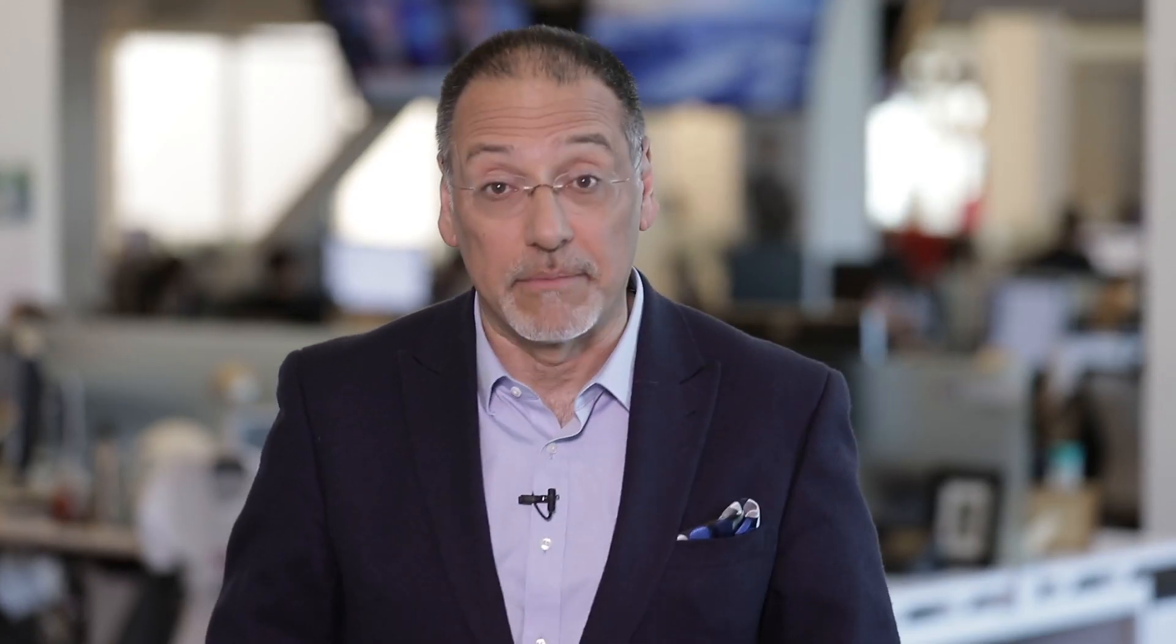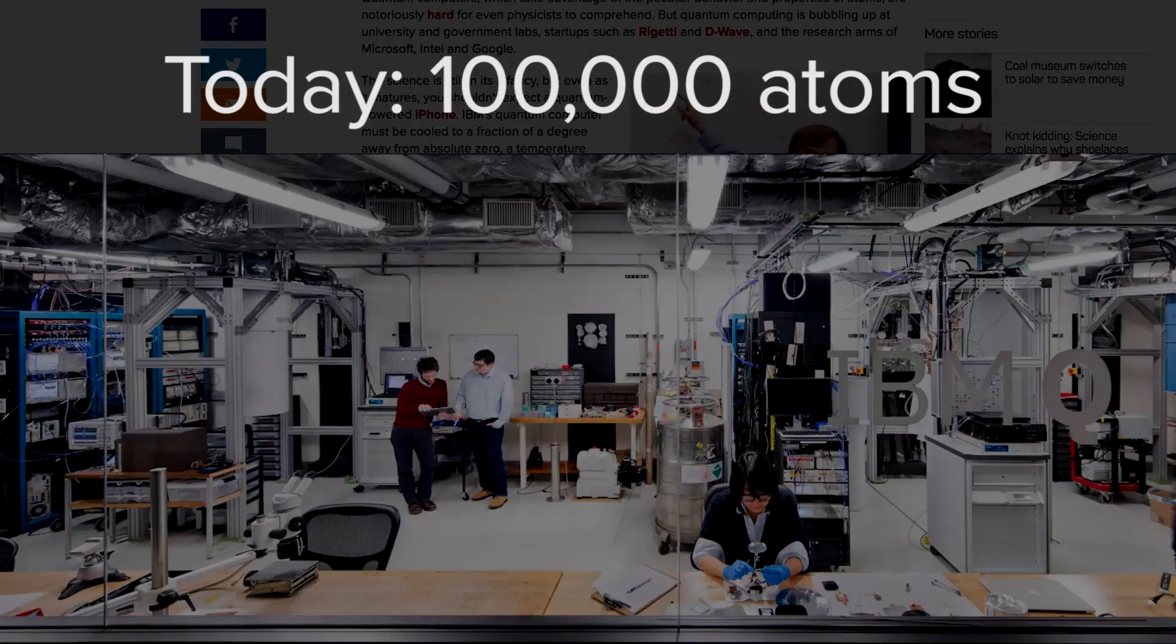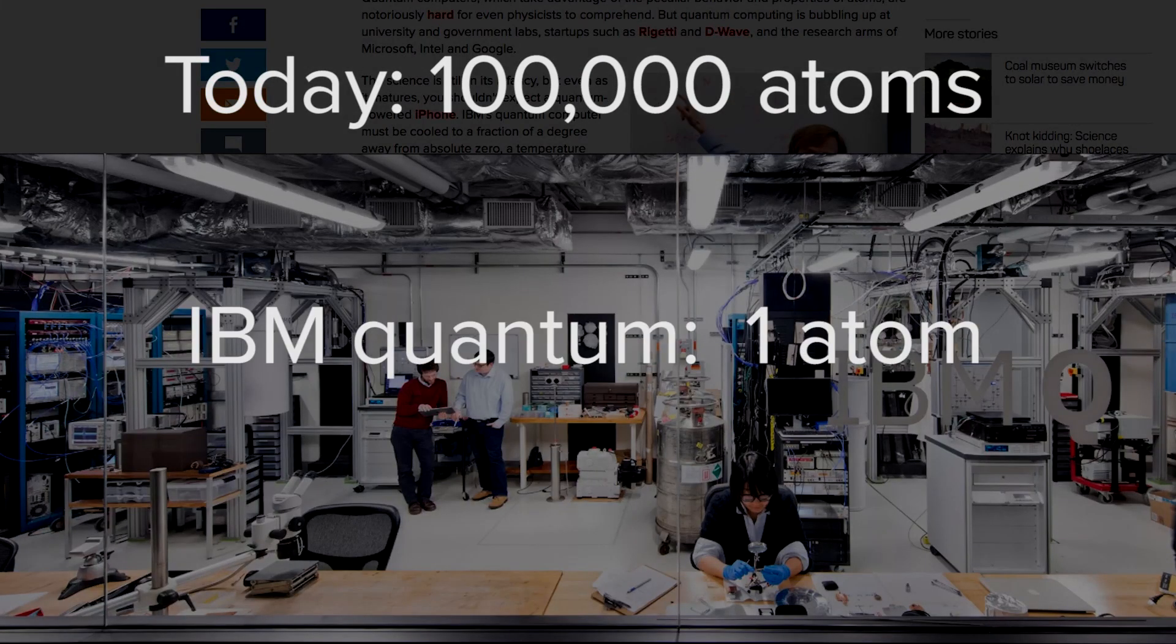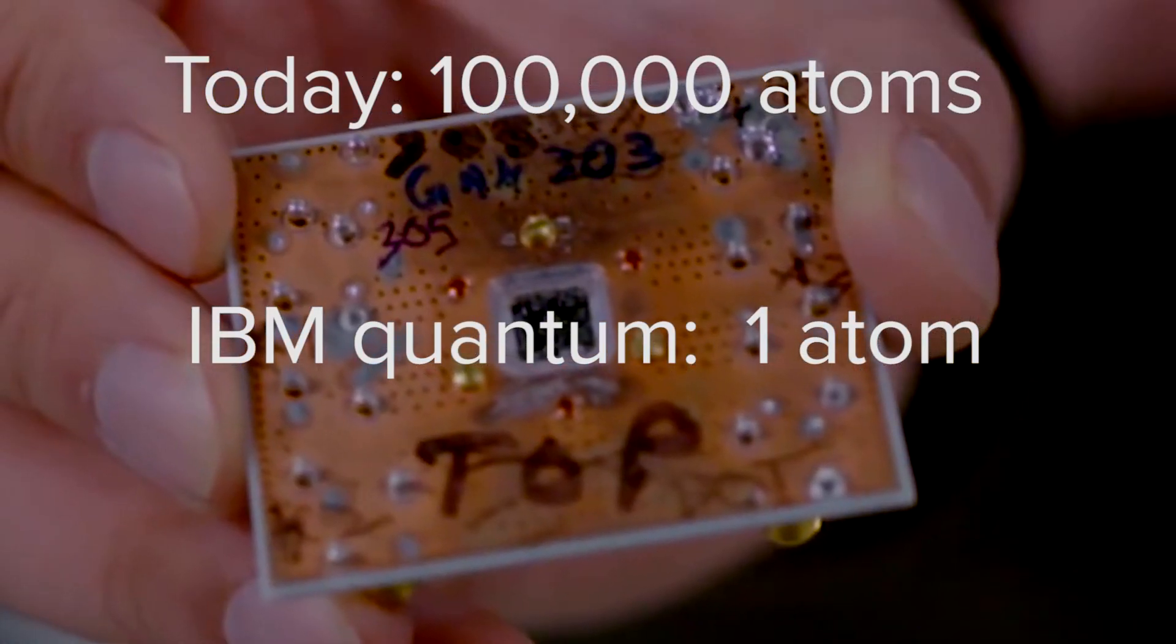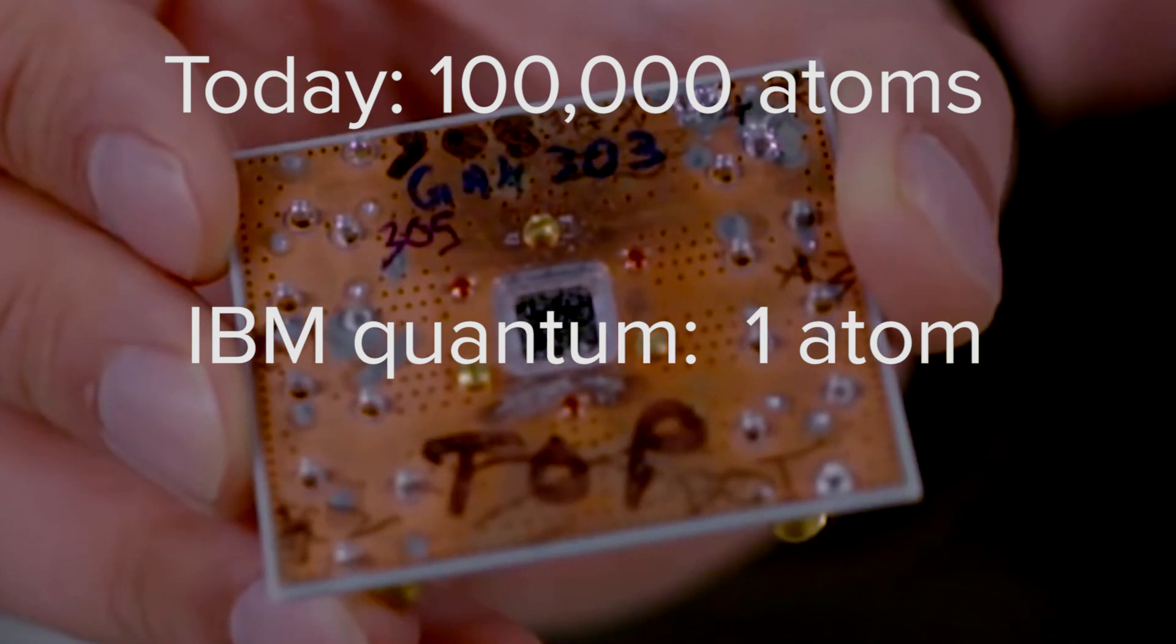CNET's Stephen Shanklin reports today's best technology uses about 100,000 atoms to represent one, one, or zero. A 100,000-fold increase is pretty impressive.